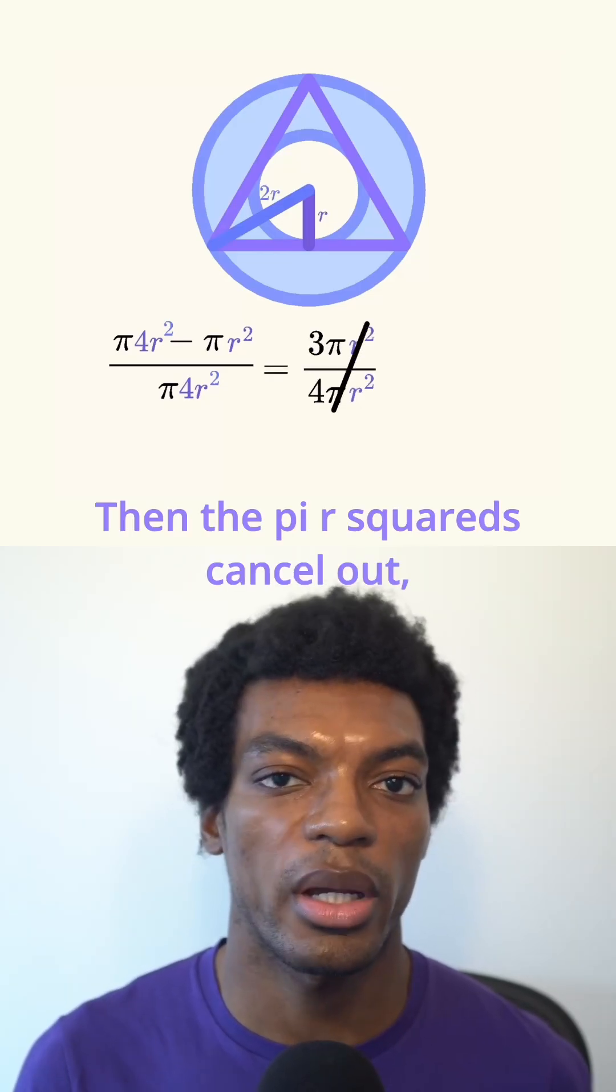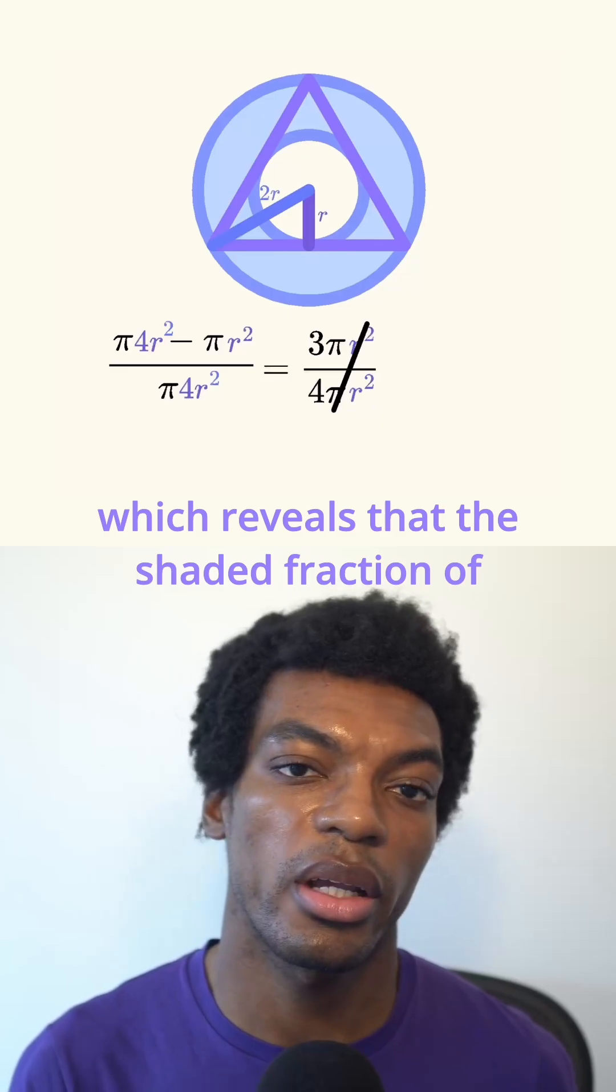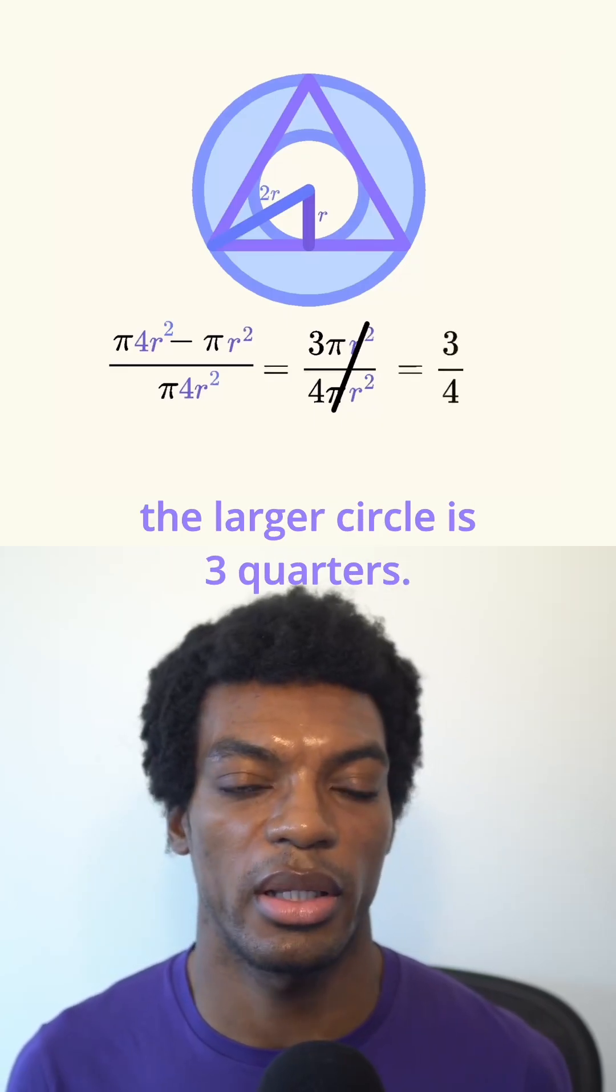Then the pi r squareds cancel out, which reveals that the shaded fraction of the larger circle is 3 quarters.